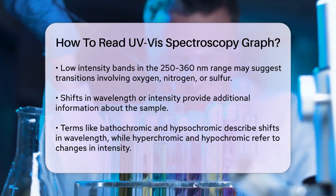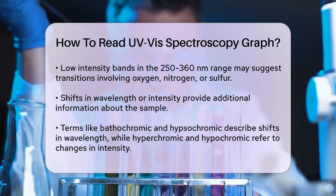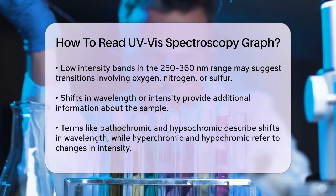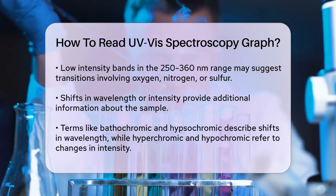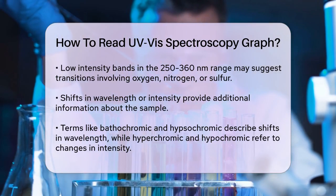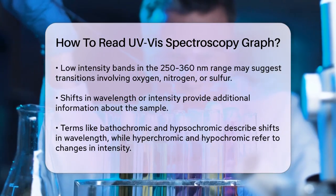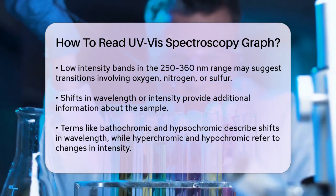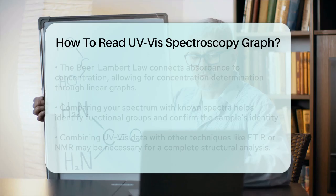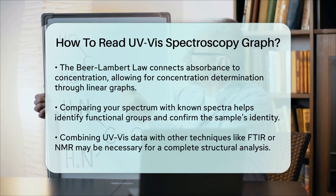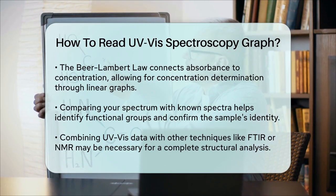Fifth, use the Beer-Lambert law. This law relates the absorbance of a sample to its concentration. If you plot absorbance against concentration, you should get a linear graph, which can help you determine the concentration of a particular molecule in your sample.